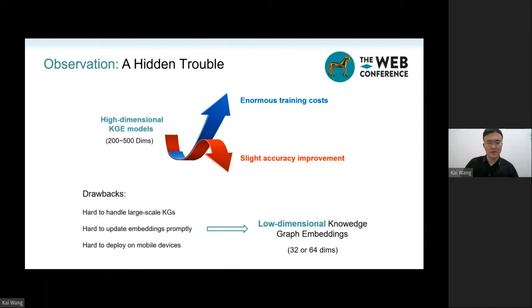It is a serious problem when we process some large-scale KGs with millions or billions of entities or deploy on mobile devices. So, instead of blindly increasing the number of parameters,